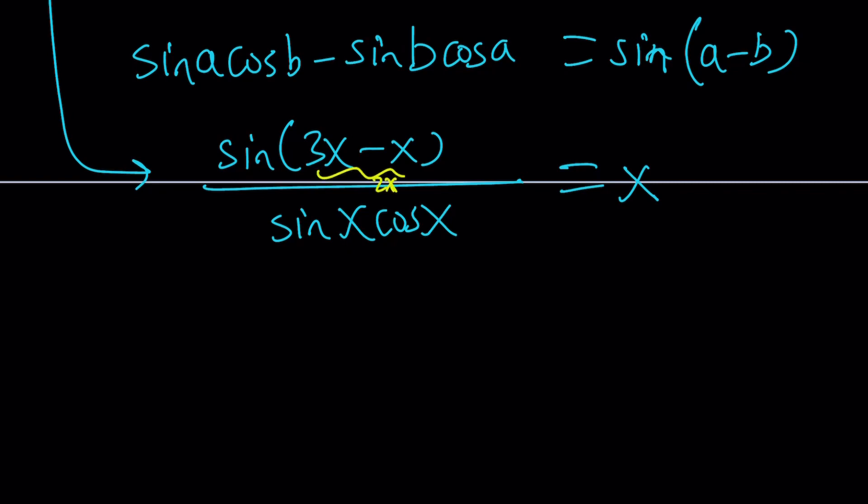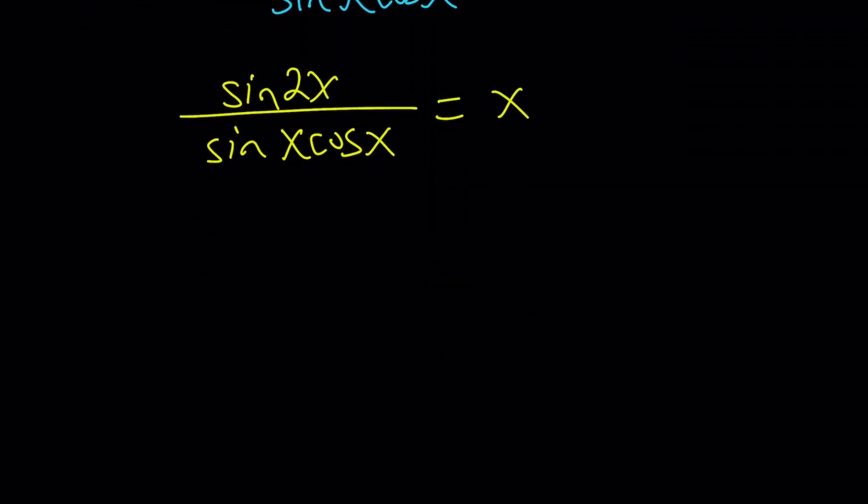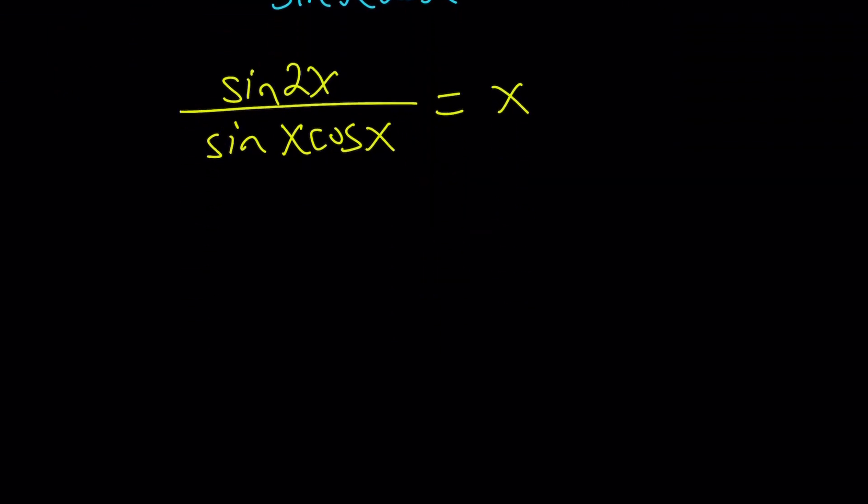But what about the bottom? If you don't know what it is, hold on. Let's do one more step. Sine 2x divided by sine x cosine x equals x. Again, this looks like a very non-standard equation. But take a look. Sine of 2x. Isn't that the double angle? Yes, it is.